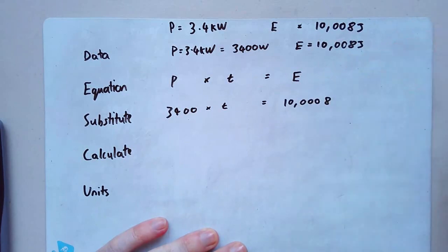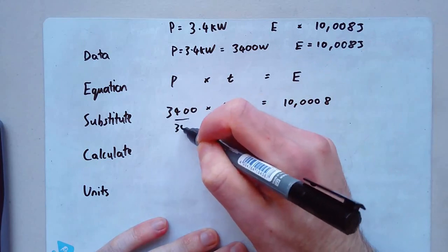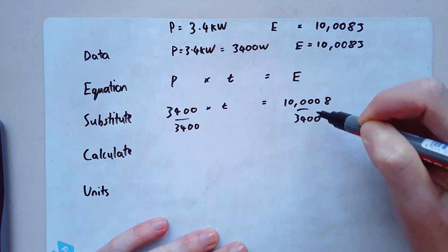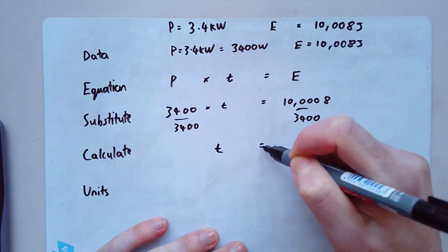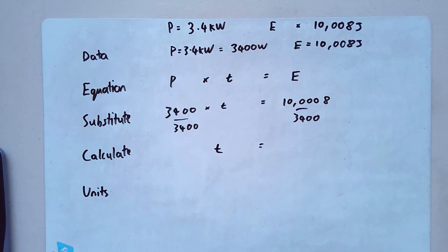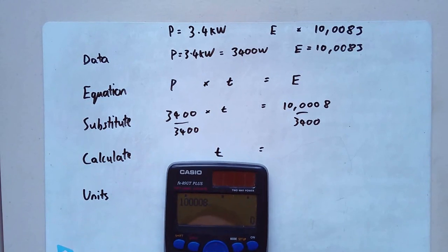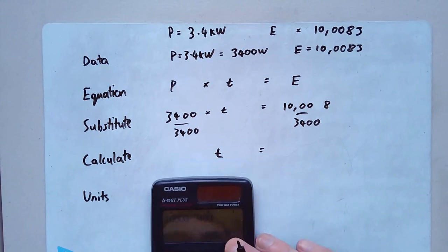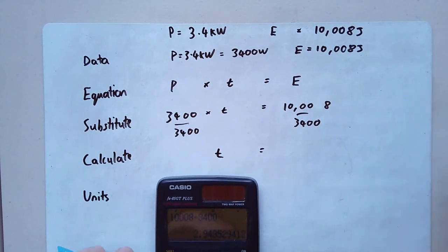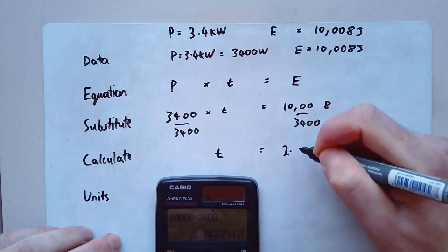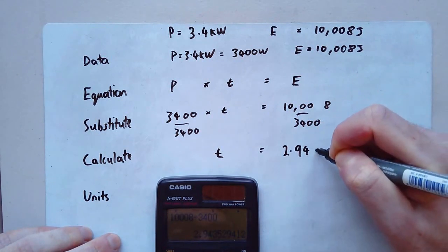I need to divide both sides by 3,400. And I get t equals, I'm going to use my calculator for this one. 10,008 divided by 3,400. And I've got a whole long number, 2.9435, et cetera. And the question they'll ask you to give it to an appropriate number of decimal places or significant figures. Let's just assume for the minute we'll give it to two decimal places. 2.94 seconds. And that's it. That's done. Now, I'm not going to give you more, sorry, the units should really have come in that step.